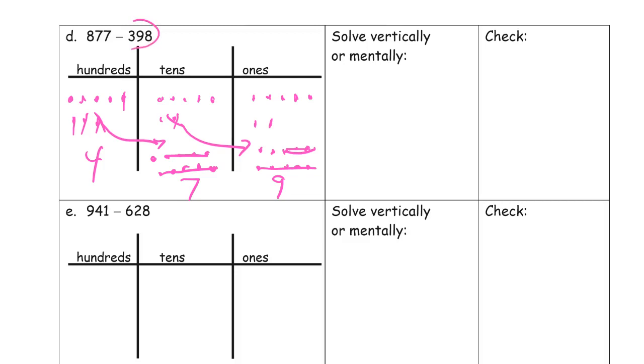Looking at this, that's pretty close to 400. So there's an easy mental strategy here. Just adding 2 to both of these. 879 minus 400 equals 479. And that's what we had.